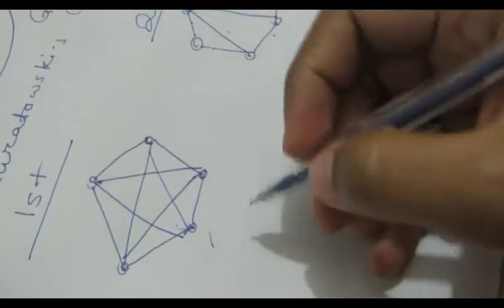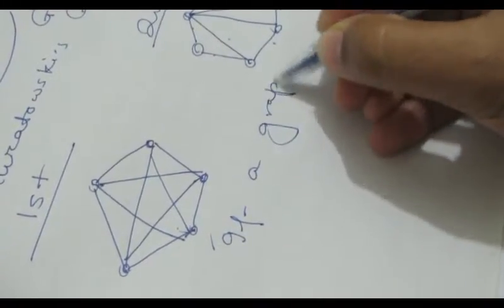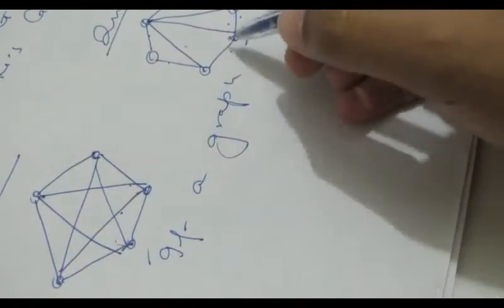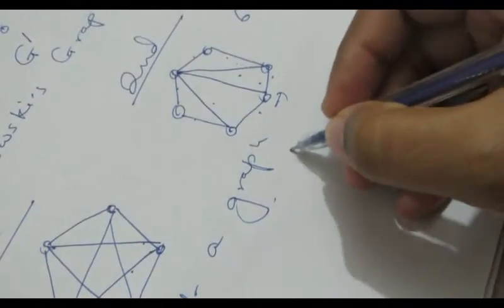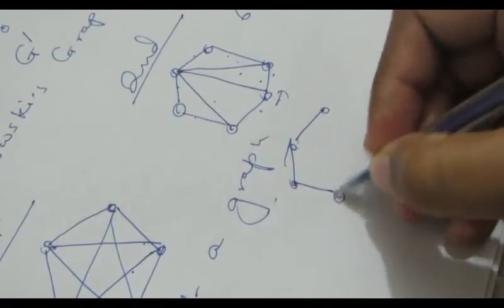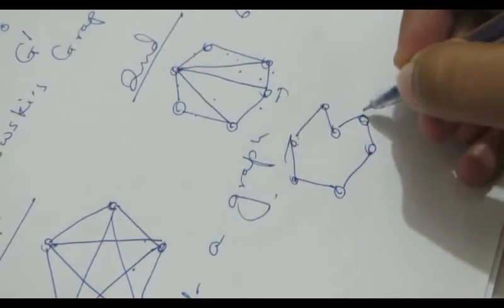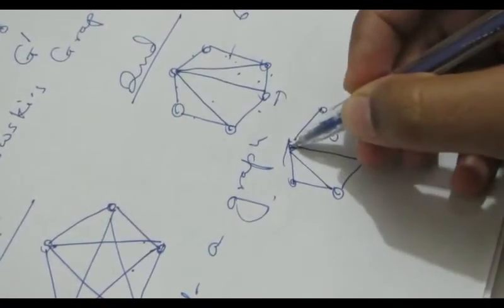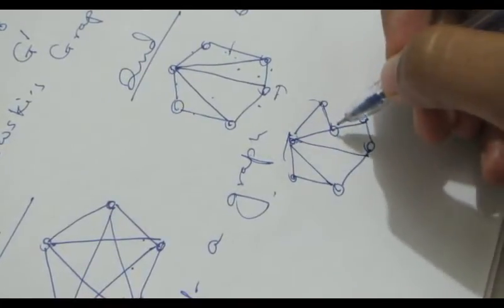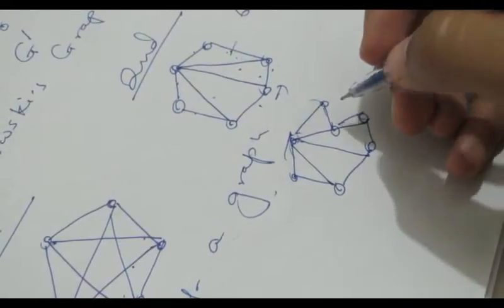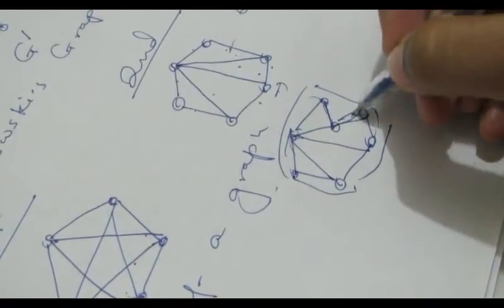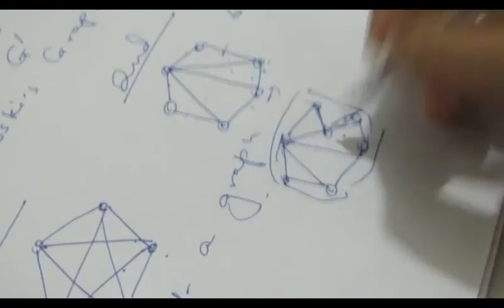What is a Kuratowski's graph? If a graph is a homeomorph of any of these two graphs, it is a Kuratowski's graph. For example, if we have broken this edge and created a homeomorph, with the rest remaining the same, then this is a Kuratowski's graph — just for example, this drawing is not accurate.